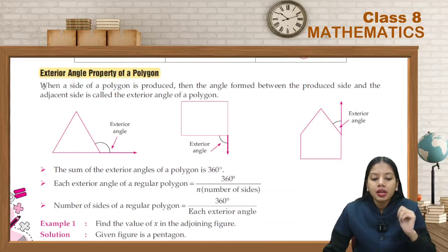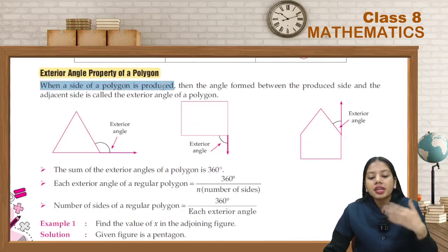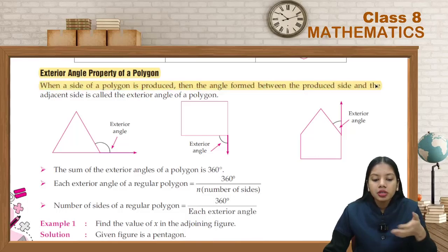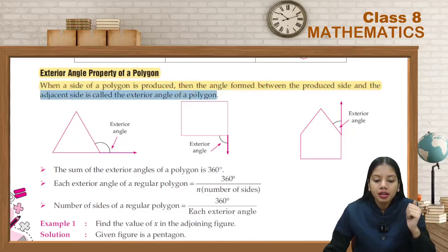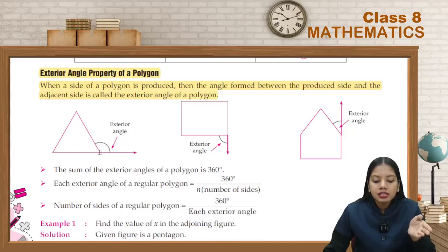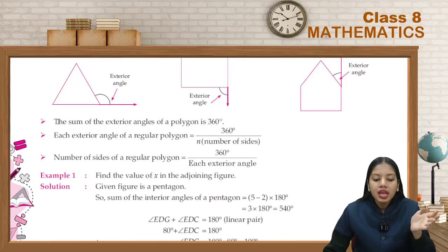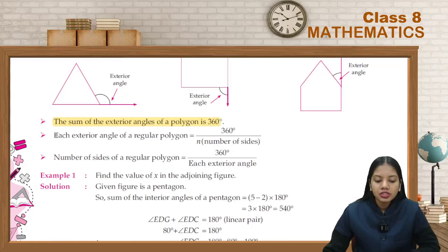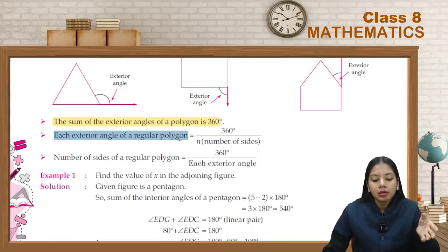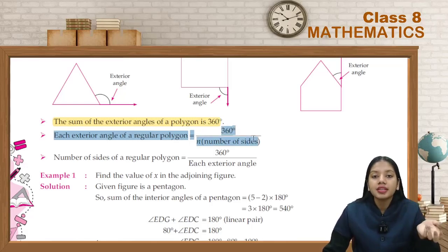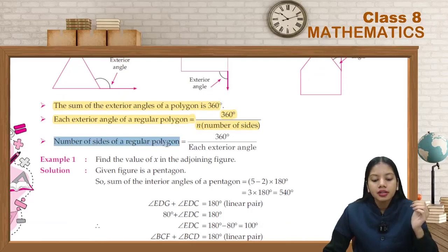Exterior angle property of a polygon: when we extend a side of a polygon, the angle formed between the produced side and the adjacent side is the exterior angle. The sum of exterior angles of a polygon is equal to 360 degrees. Each exterior angle of a regular polygon equals 360 degrees divided by n, where n is the number of sides. The number of sides also equals 360 degrees divided by each exterior angle.